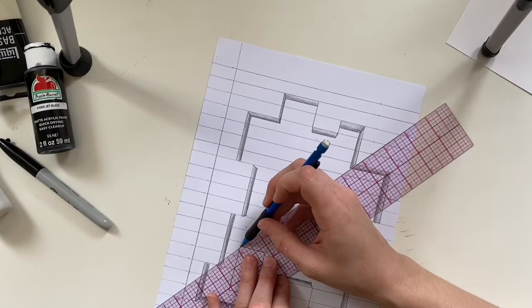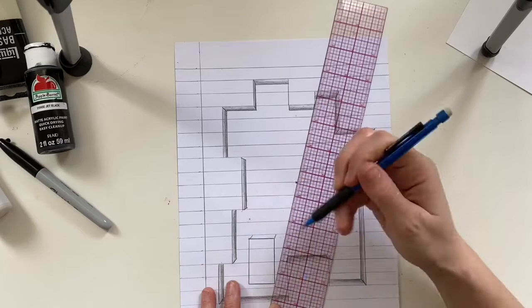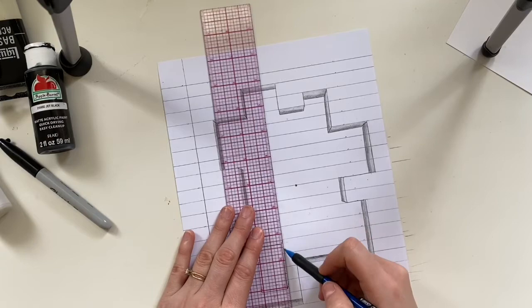All right. So now we still have to do the same converging lines going to that vanishing point to create us a 3D box. So it looks like that paper is still 3D, but just floating back.